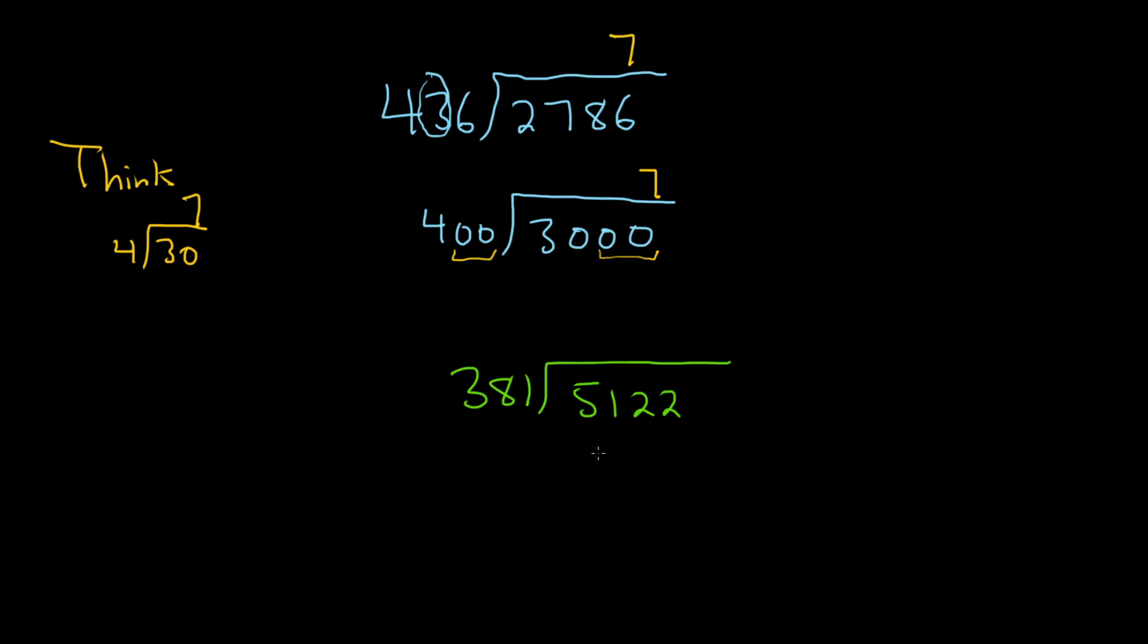Again, the first thing you want to do here is round to the largest place value. So 381 will round up to 400, and the 5122 will round down to 5000.